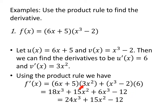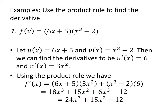Now this is a fine answer, but get used to simplifying. This is the only step that involves calculus. Now we're going to distribute: 6x times 3x² to get 18x³, 5 times 3x² to get 15x², x³ times 6 to get 6x³, and negative 2 times 6 to get negative 12. When we combine like terms, the 18 and the 6 give us 24x³, plus 15x² minus 12.